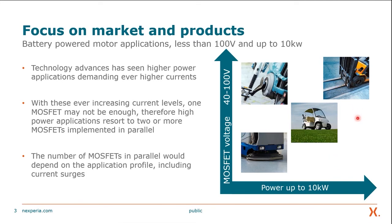The number of MOSFETs in parallel depends on the application profile. All these different applications require different current profiles, and that also dictates how many MOSFETs they need in parallel. Furthermore, depending on the application, they might also require handling large current surges — for example, an electric golf buggy, if you have to climb a curb, it's going to need a large amount of current for a short period of time to actually climb that curb.